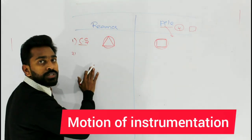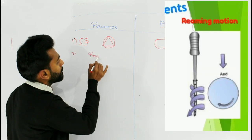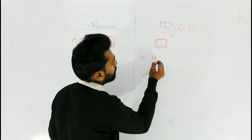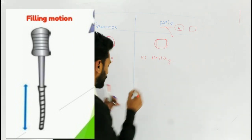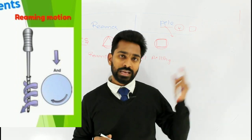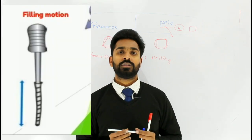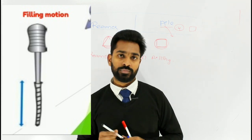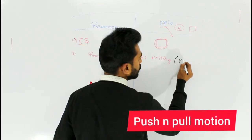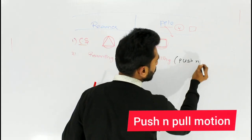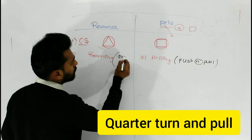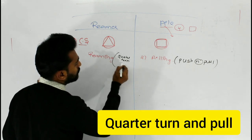Coming to the second point: reamers are always used in a reaming motion, whereas files are used in a filing motion. Reaming motion is nothing but a quarter turn and pull, whereas filing motion is a linear motion — just a push and pull motion. There is no rotation in case of filing.